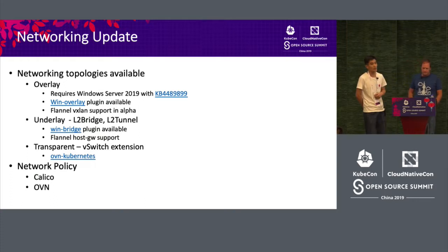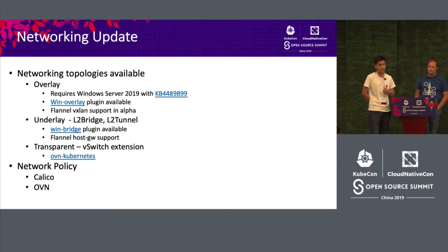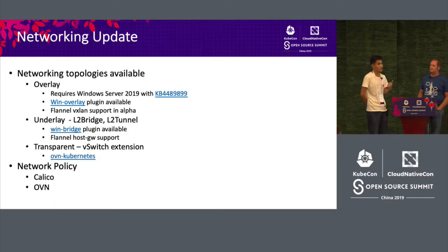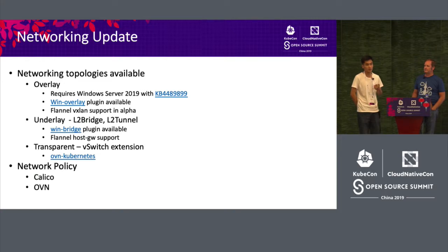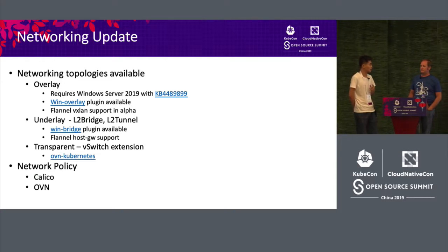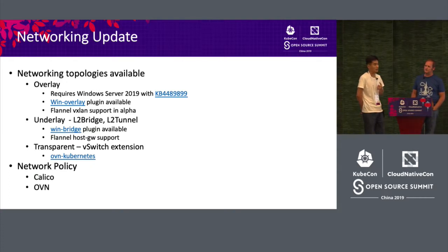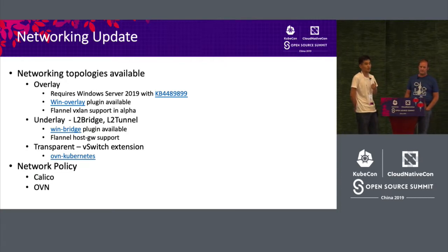For networking, since the beta of Windows in Kubernetes, we've engaged the whole community from both the CI side and network providers such as Calico and Flannel, enabling many plugins to support Windows Server containers. For Windows Server there are three kinds of network topology: overlay, underlay, and transparent. For overlay, it's based on VXLAN. You have two choices: the Win overlay network plugin, which is part of the official CNI plugin, and Flannel support — so if your cluster already uses Flannel, you can still use it when joining Windows nodes.